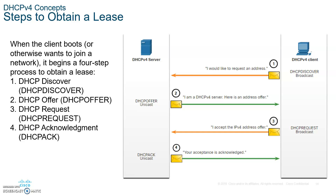Write this down. First, when you turn your computer on as a client, the client will broadcast a frame called the DHCP Discover, looking for the nearest DHCP server in the LAN. You may have multiple DHCP servers working together in the LAN for redundancy purposes, so if one goes down the other picks up immediately, and the DHCP servers are always communicating with each other.